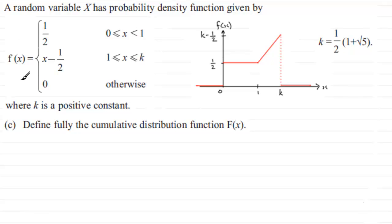Now in the first part of the question we had to draw the probability density graph which I've got here, and the next part we had to show that k was equal to this value here. So using these facts, how do we go about defining this cumulative distribution function F(x)?